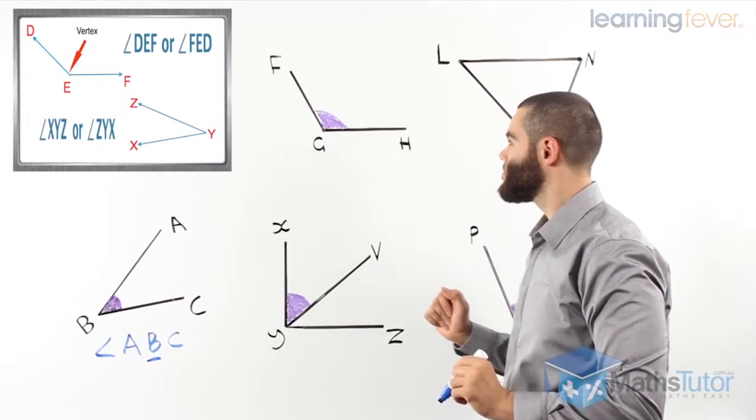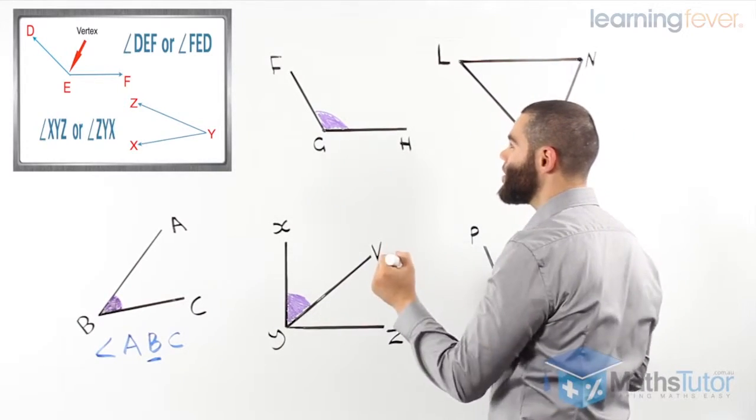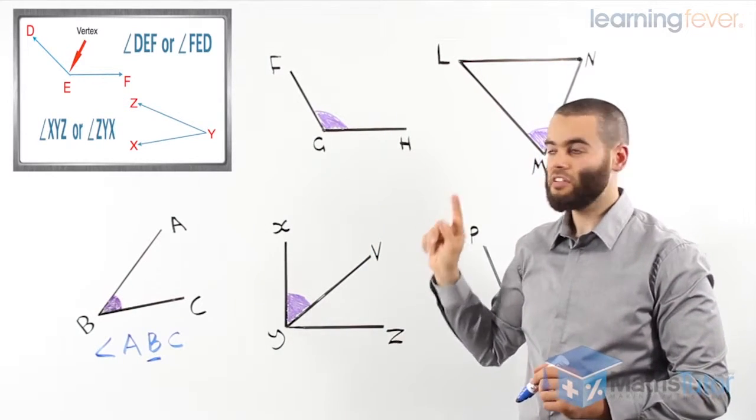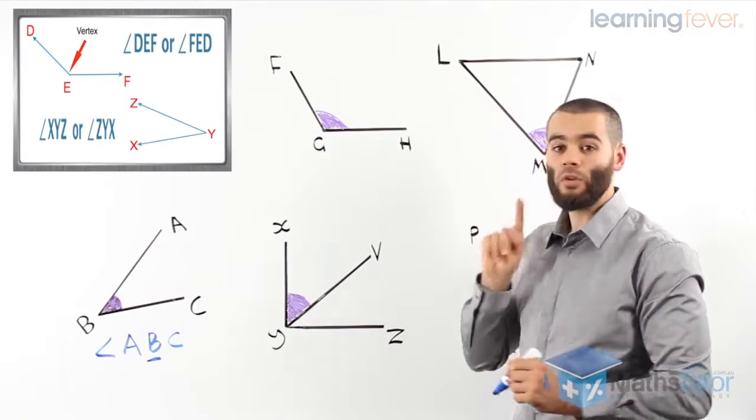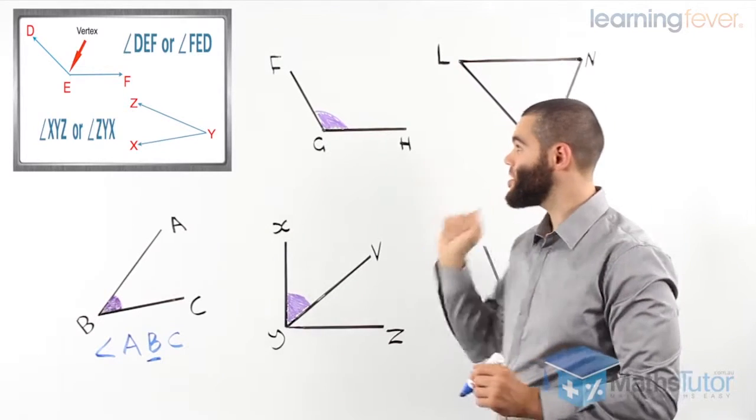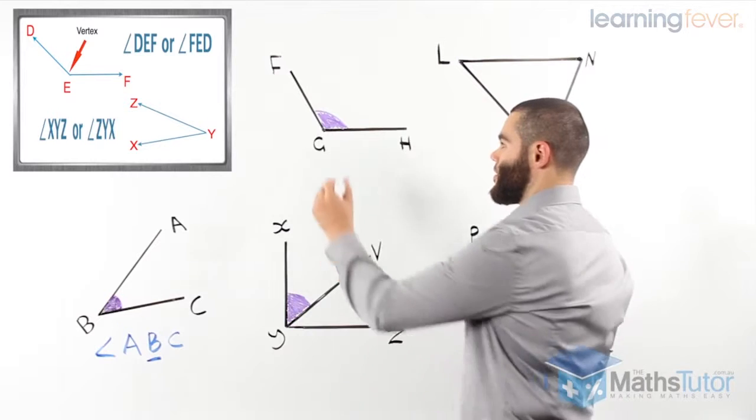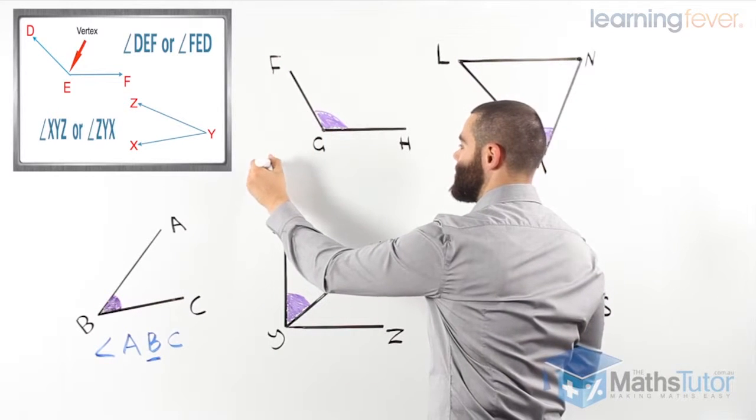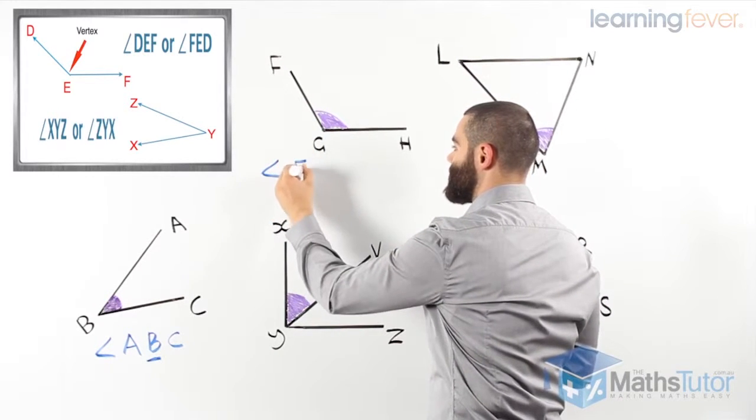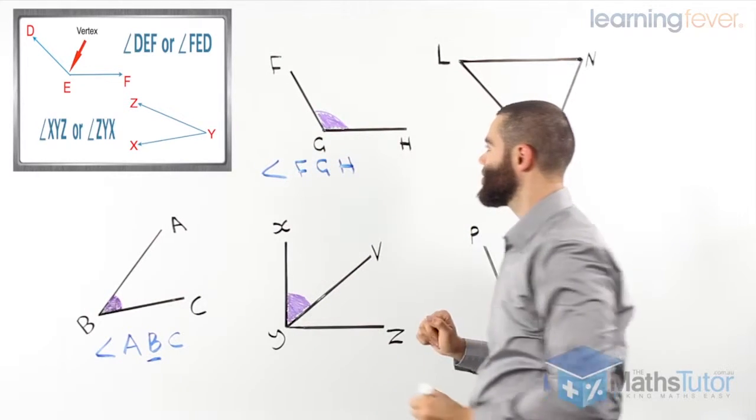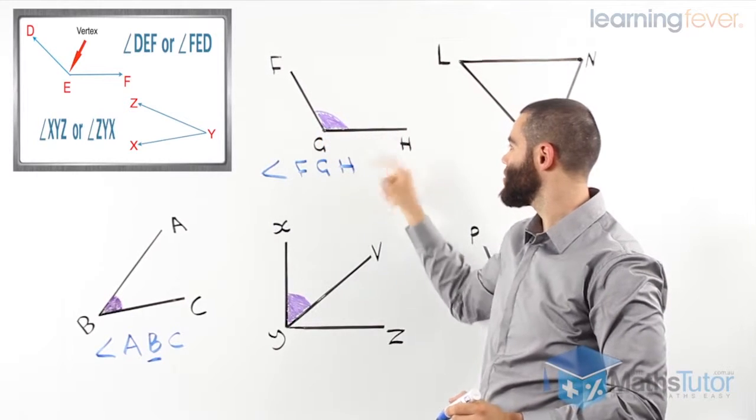Another example. We have another angle here marked with an F, with a G, and with an H. So, again we look for the vertex. The vertex is the G. There it is, which is the corner. So, we want to write it. Angle FGH.